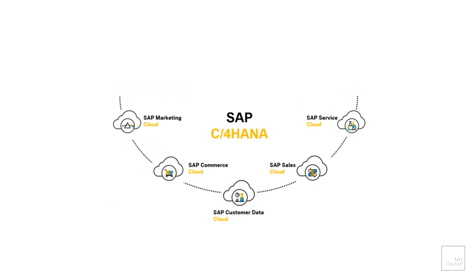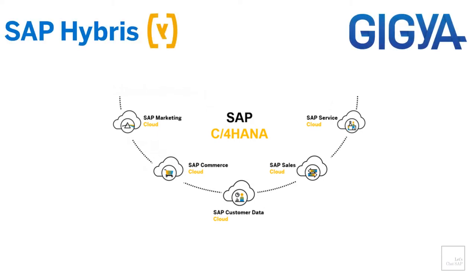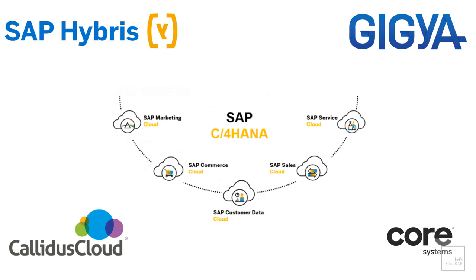So what is SAP C4HANA? Launched in 2018, SAP C4HANA is basically an integrated portfolio of cloud solutions which consists of cloud applications like Hybris, Gigya, Callidus Cloud and Core Systems. Coupled along with advanced technologies like machine learning and artificial intelligence, its aim is to modernize the sales-only focus of SAP's legacy CRM products. SAP C4HANA provides capabilities such as commerce, marketing, revenue, sales and services.